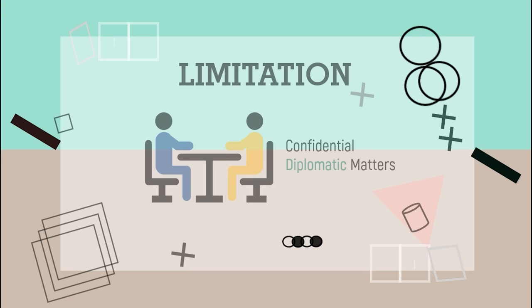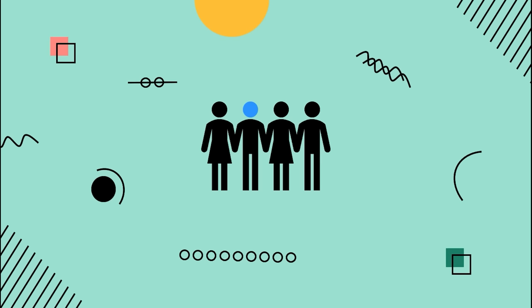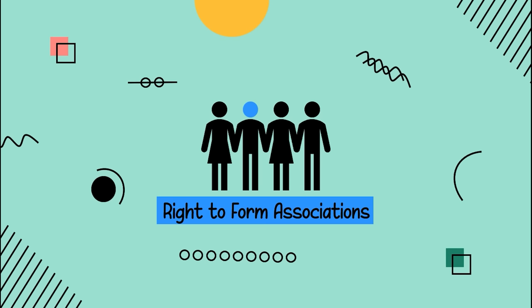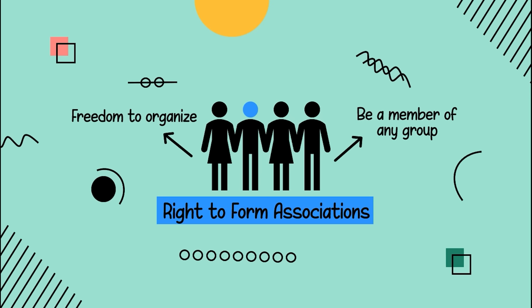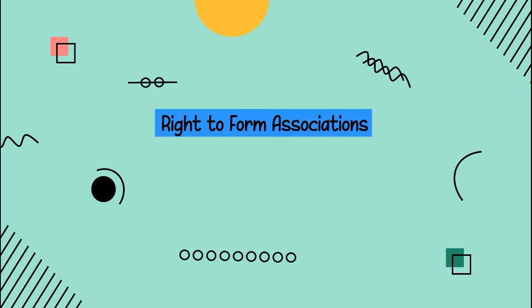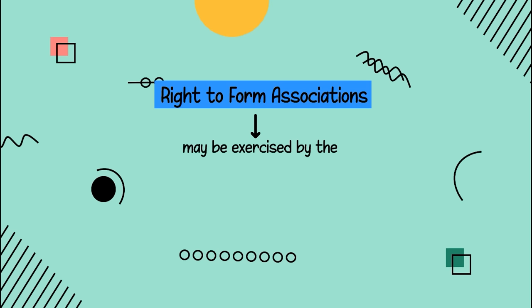Next, the right to form associations. This is the freedom to organize or to be a member of any group, association, union, or society. This right may be exercised by the employed — both in the public and private sectors — and also the unemployed.